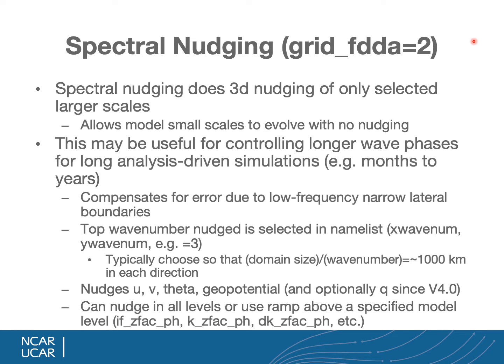Spectral nudging is a form of grid nudging that selects only larger scales to nudge, allowing the model's small scales to evolve freely while keeping the large scale on track. This is useful for controlling longer wave phases in long analysis-driven simulations running for months or years. If your domain is very large, long waves might go slightly out of phase in the interior. Spectral nudging keeps them in phase with the analyses or reanalyses and compensates for errors due to low-frequency narrow lateral boundary conditions.